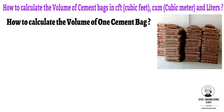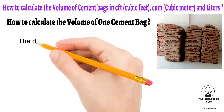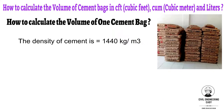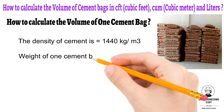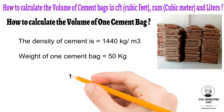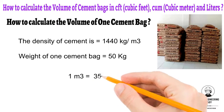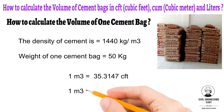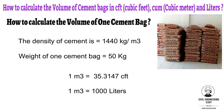To answer this question, we need to memorize some key relationships: the density of cement is 1440 kg per cubic meter, the weight of one bag of cement is 50 kg, one cubic meter is equal to 35.3147 cubic feet, and one cubic meter is equal to 1000 liters. Once you have these relations, it is easy to calculate the volume of a cement bag.